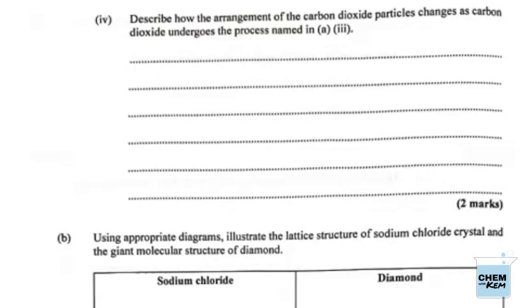Part four: Describe how the arrangement of the carbon dioxide particles changes as carbon dioxide undergoes the process named in A3 above. So it's sublimation. We'd have to decide which state we're moving from, whether we're going from the gas to the solid or the solid to the gas. Let's describe what happens first when we're in the solid state, and then as we move from the solid to the gaseous state, heat would have to be applied.